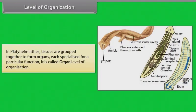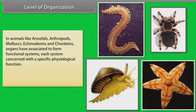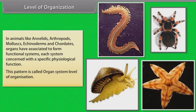In Platyhelminthes, tissues are grouped together to form organs, each specialized for a particular function — this is called organ level of organization. In animals like annelids, arthropods, mollusks, echinoderms and chordates, organs are associated to form functional systems, each concerned with a specific physiological function. This pattern is called organ system level of organization.